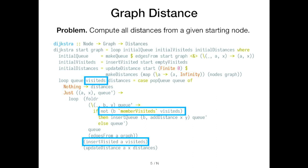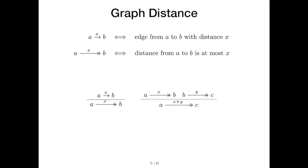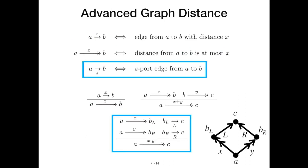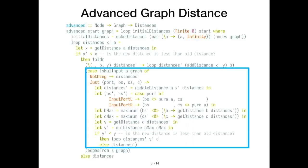This is all well and good for the simple problem of graph distance. But what do we have to do to handle something a bit more complicated? Let's extend graph distance to something I'll call advanced graph distance. We're adding a new kind of node — a multiply node — with two input ports, where the distance to a multiply node is the product of the distances to its input ports. To handle this new node, we have to add a new chunk to our implementation, and you can see the implementation is growing.